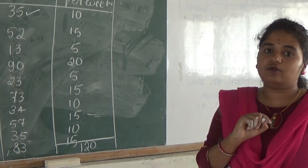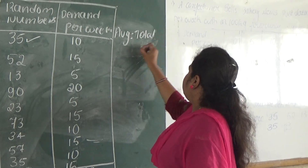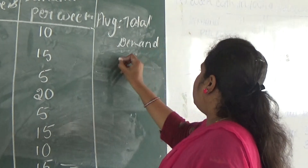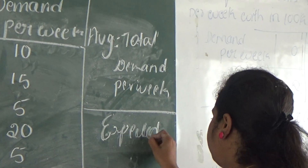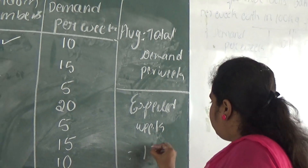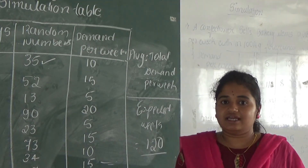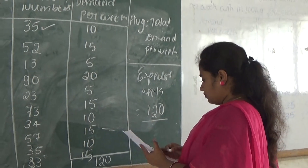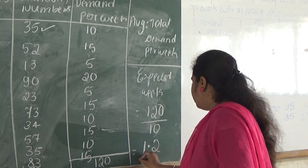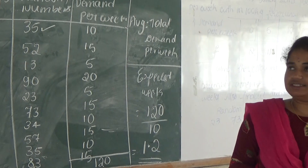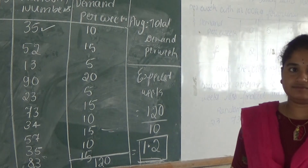Now calculate the average demand per week. The formula is total demand per week divided by expected weeks. The total demand per week is 120, and the expected weeks is 10. So the average demand per week is 120 divided by 10, which equals 12. This is the solution. Thank you.